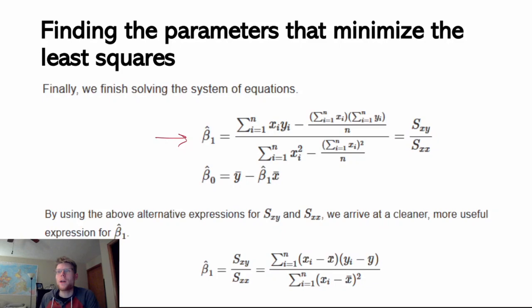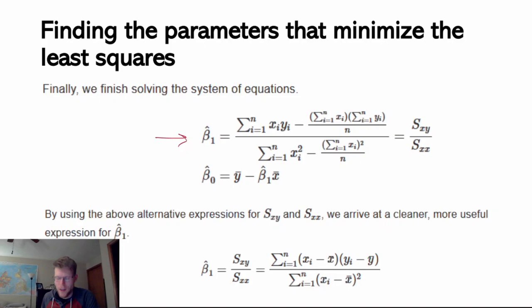One common abbreviation is to simplify these terms. I can use S sub xy to represent the numerator and S sub xx to represent the denominator. Thinking of these as sum of squares terms: S sub xx is the sum of squares for x, and S sub xy is a mixed sum of squares term — the difference between x sub i and x bar, and y sub i minus y bar, multiplied together. That gives my least squares estimate for beta hat 1.